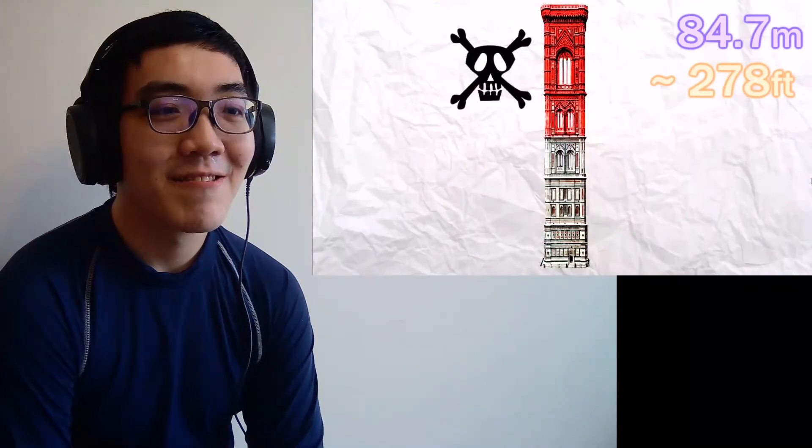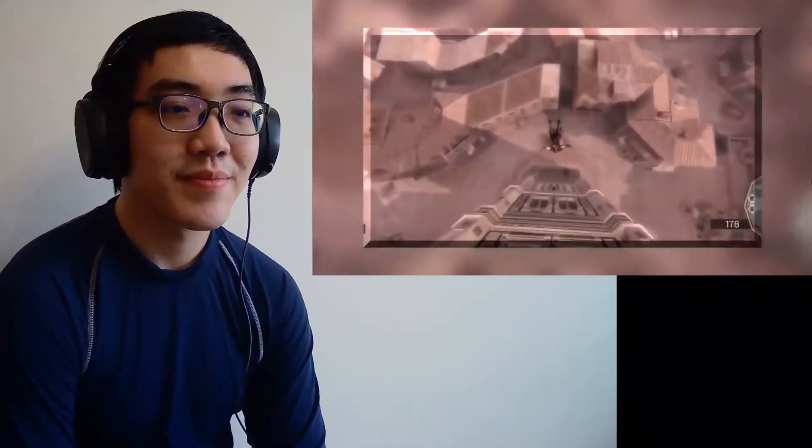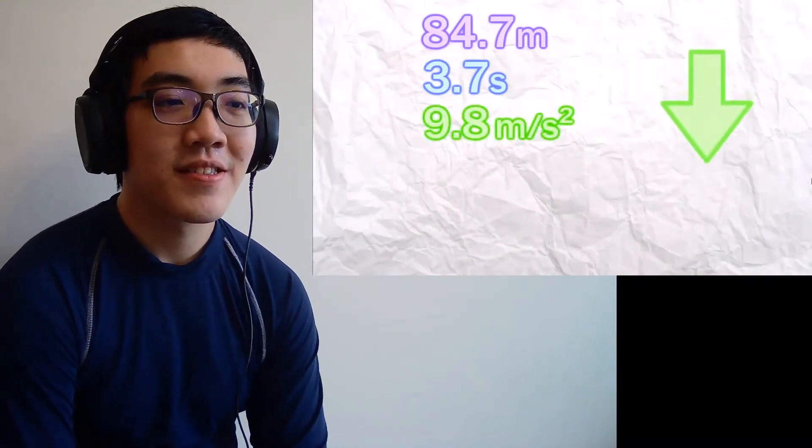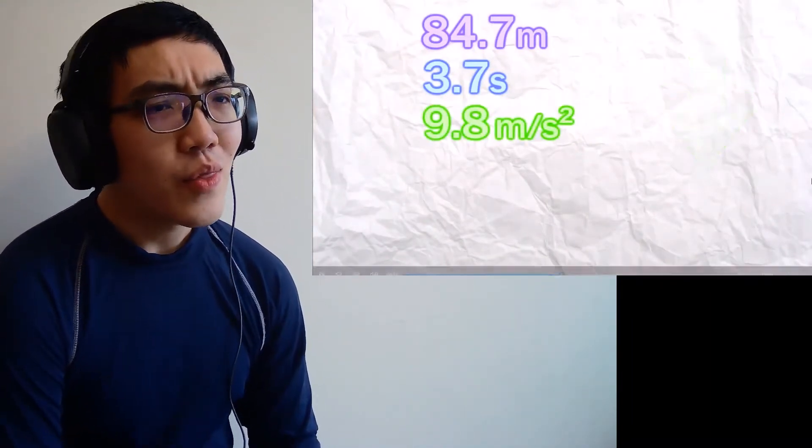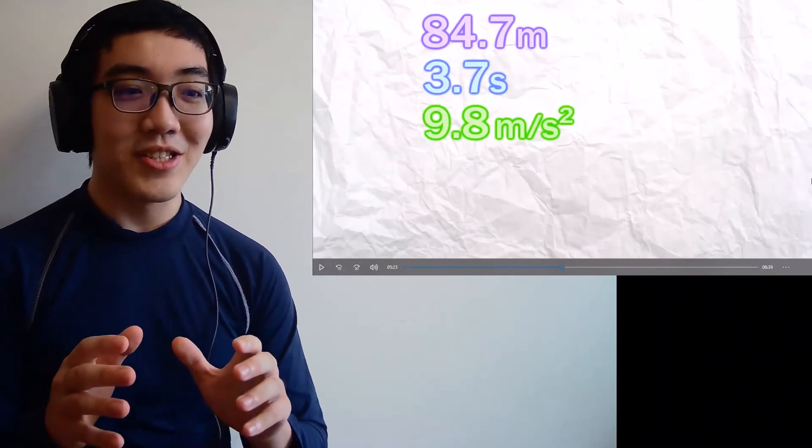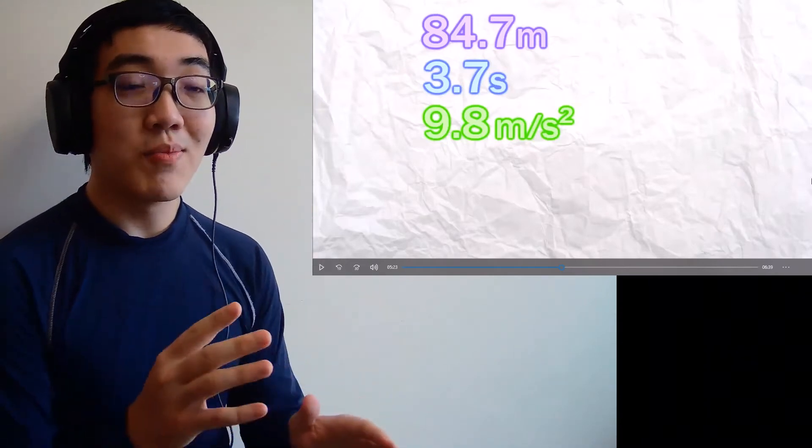It's me, Mario! Or as the Americans pronounce it, Campanile di Giotto. An 84.7 meter or 278 foot tower built around 1340. At this height, it's well above the 100 foot Red Dead Redemption zone. By my calculations, the fall takes around 3.7 seconds to complete.